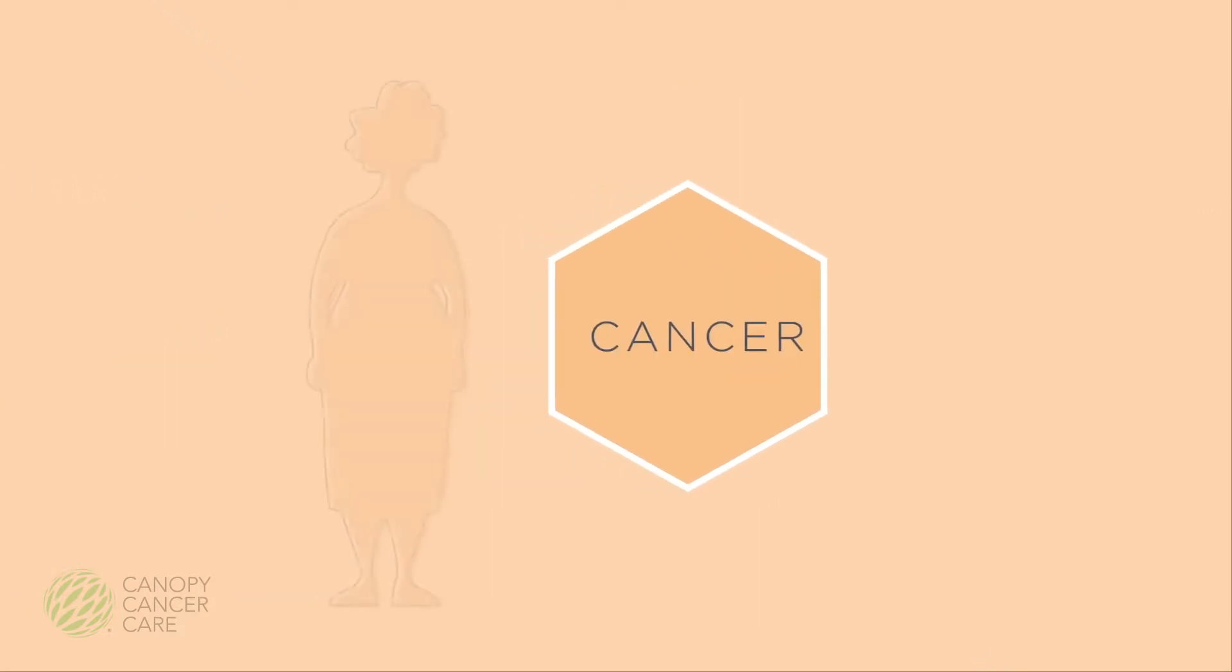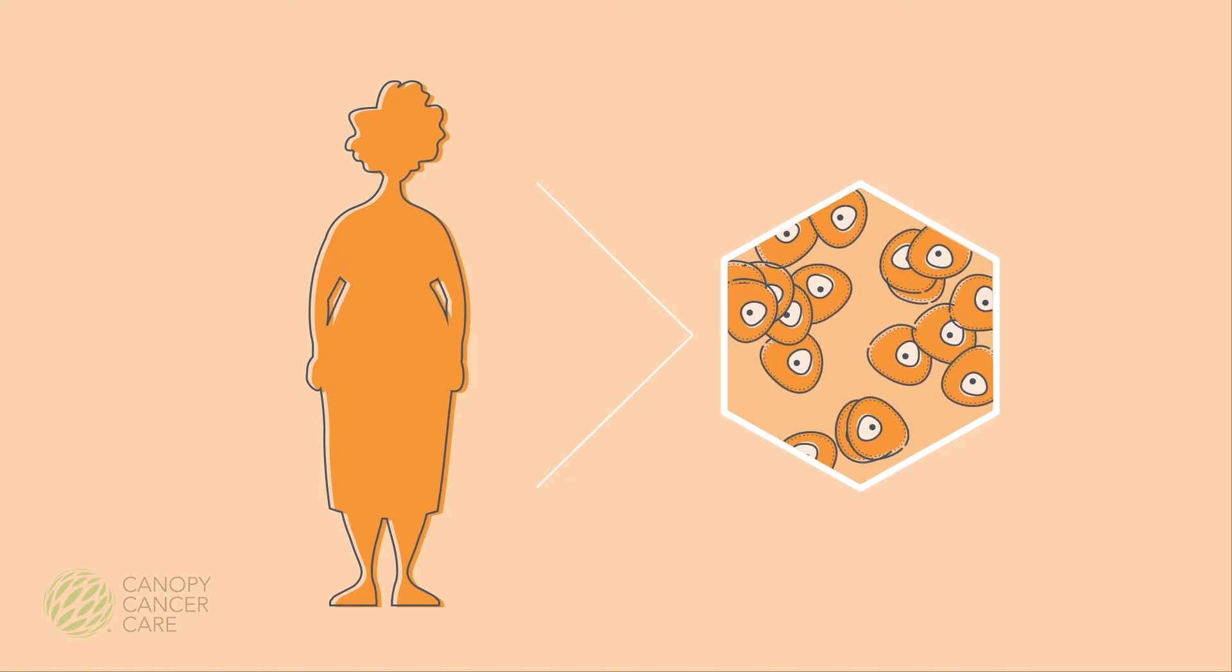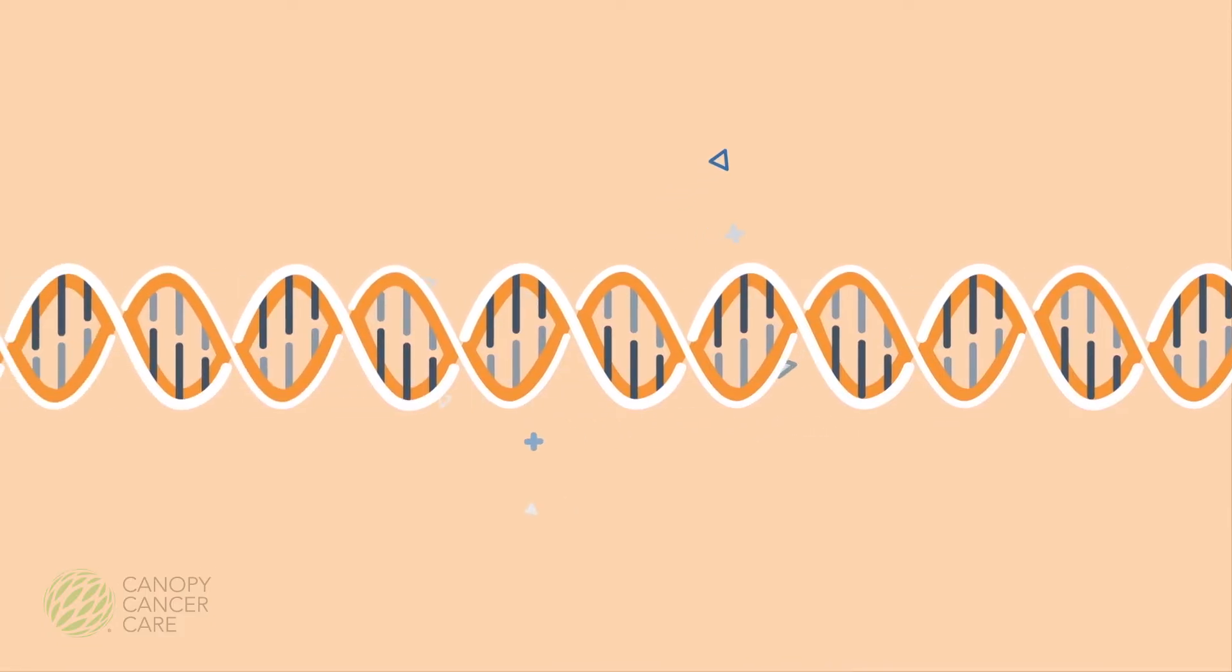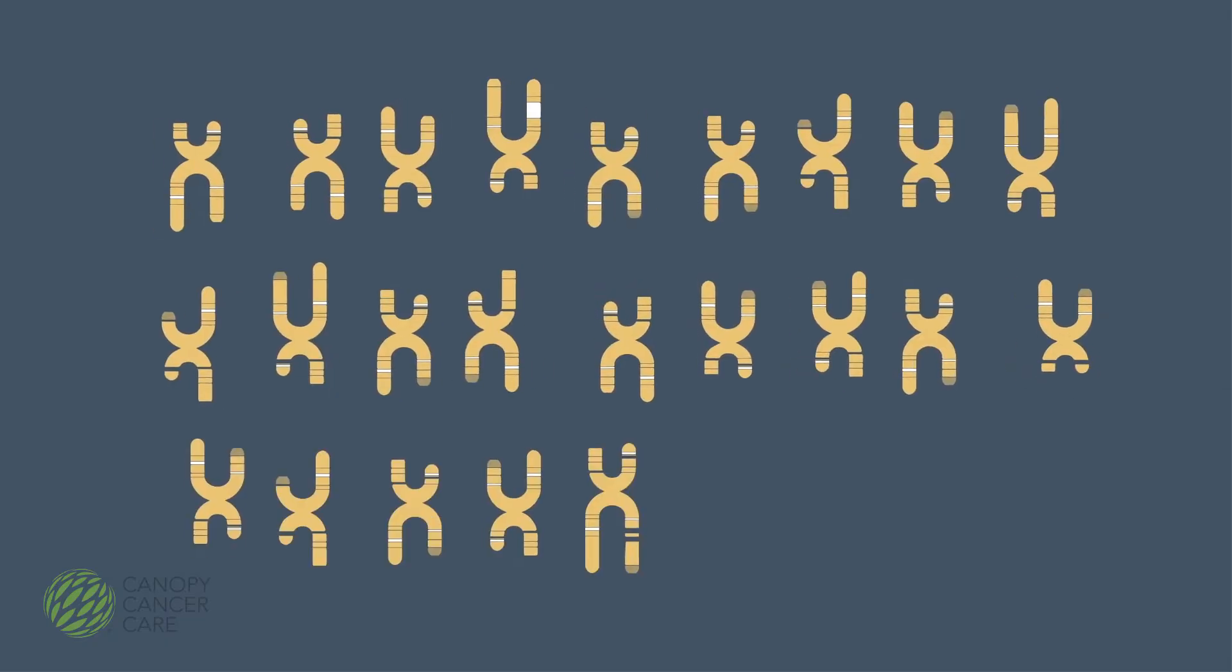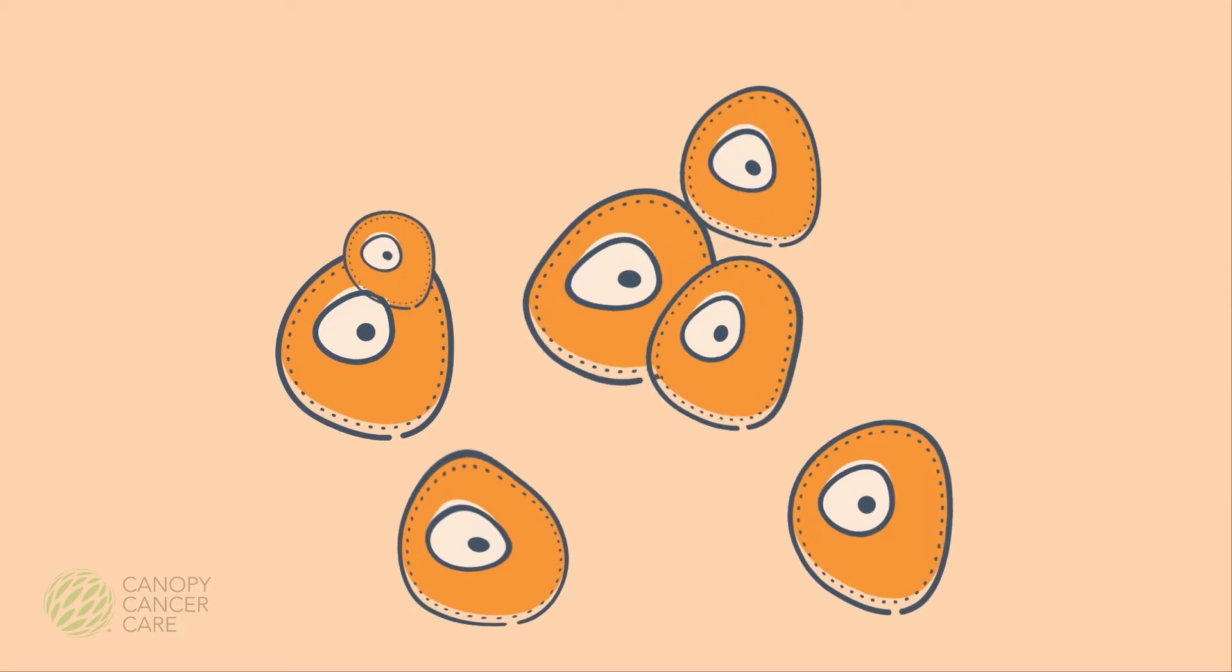What is cancer? Our bodies are made up of millions of cells. Inside each cell is an instruction manual called DNA which has chapters we call genes. Genes tell the cells how to behave, when to make new cells and when to die.